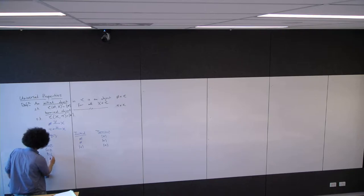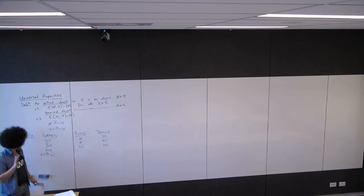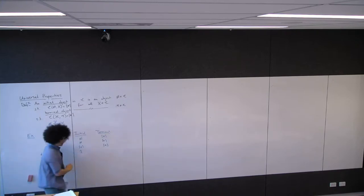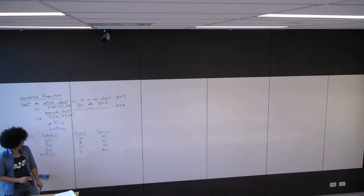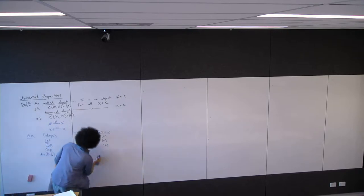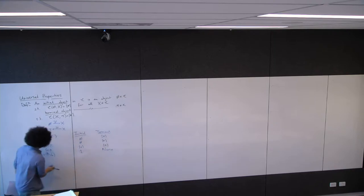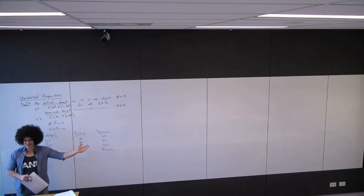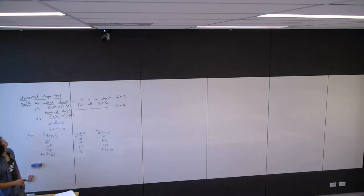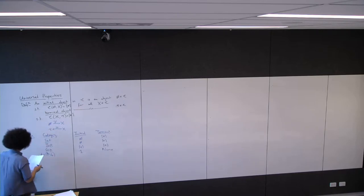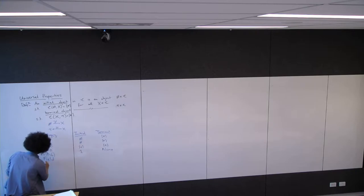In the category Div(N+), which was the one where you take the positive natural numbers and put a partial order on them by divisibility, the initial object is one — one divides all numbers. But it doesn't have a terminal object, because there is no number that every other number divides. And then there's the category of fields, which has fields as objects and ring homomorphisms as morphisms, and it has neither initial nor terminal objects.